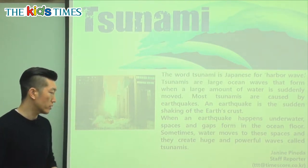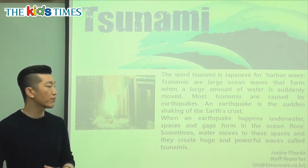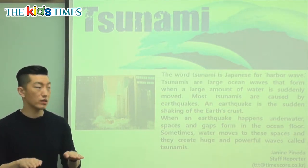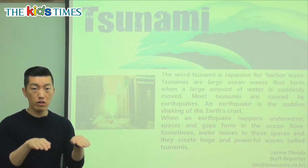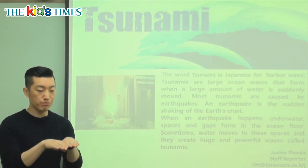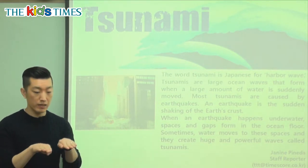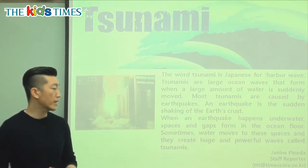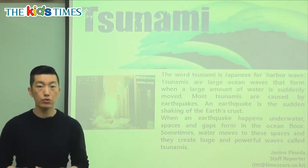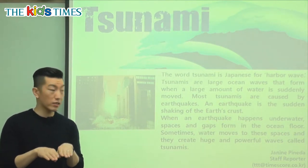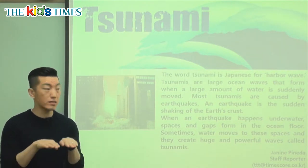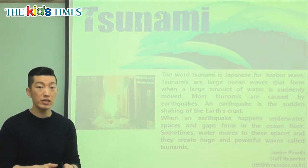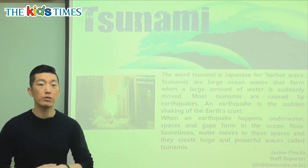When an earthquake happens underwater, spaces and gaps form in the ocean floor. Space means not together, and gap also means the large space in between two things. The cover of the earth is a big piece of rock, and when this rock is broken because of an earthquake, many things can happen. Sometimes water moves into these spaces and they create huge and powerful waves called tsunamis. When the earth starts shaking, the crust — the rock layer — starts breaking apart. Sometimes the water goes into that gap, and because this water is moving very quickly and shaking, that's when tsunamis can happen.